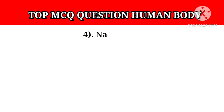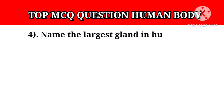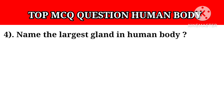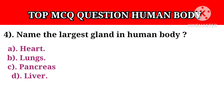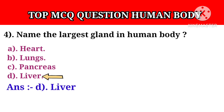Question number 4: Name the largest gland in the human body. Option A: Heart. Option B: Lungs. Option C: Pancreas. Option D: Liver. Answer D: Liver.